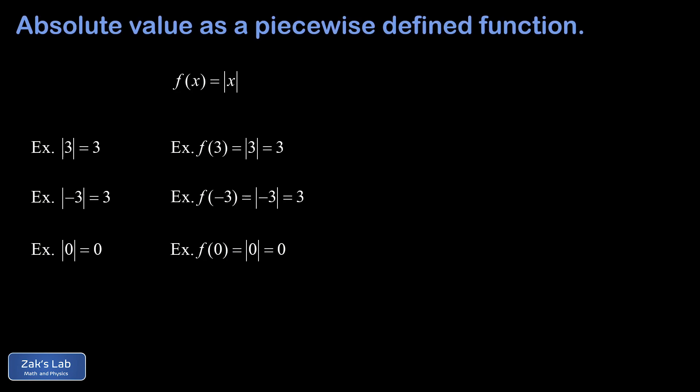So how do we go about expressing this function as a piecewise defined function? What we're going to do is split into two different cases. When X is a non-negative number, meaning when it's positive or zero, the absolute value function is going to leave it alone. So f of X is just equal to X, as long as X is greater than or equal to zero. In other words, whatever you put into this function, the same exact thing pops out, provided it's non-negative.